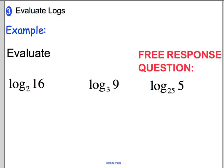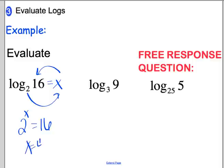We can use the log loop to help us in our third objective, which is to actually evaluate these logs. What does log base 2 of 16 equal? We can't use our calculator — it only works in base 10. Instead, let's use our log loop. We want to know what this equals, so we'll say equals x, giving us 2 to the x equals 16. Using guess and check: 2 to what power equals 16? That's 2 to the 4th, so log base 2 of 16 equals 4. For log base 3 of 9, we rewrite it as 3 to what power equals 9, and that's 2.